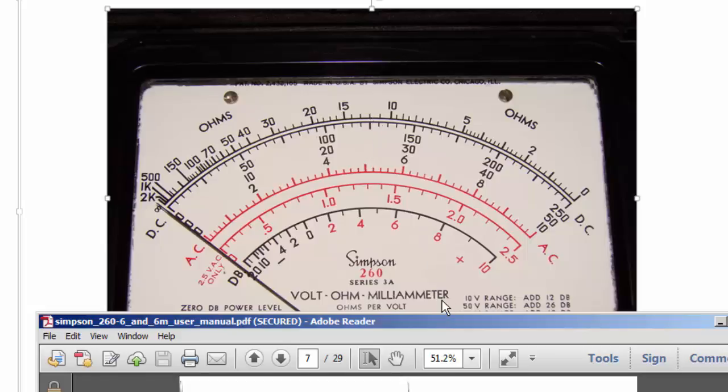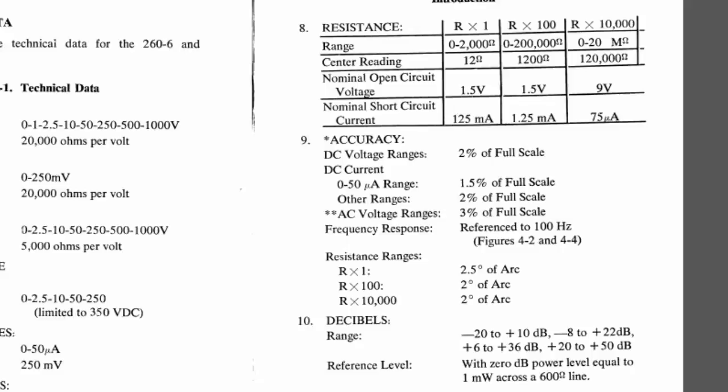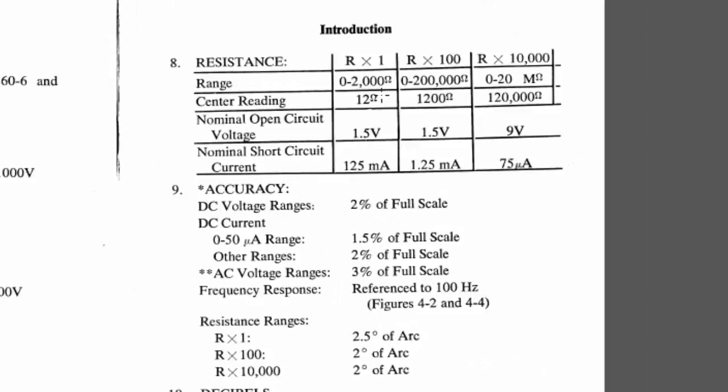And that's 12 ohms and that's exactly what this states that the center reading is 12 ohms. It's also telling us that the nominal open circuit voltage is 1.5 volts and here it's even telling us what the nominal short circuit current is and that's with the meter leads shorted is 125 milliamps. And when I come down to the specification R times one is 2.5 degrees of arc.